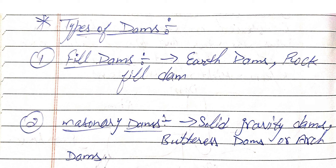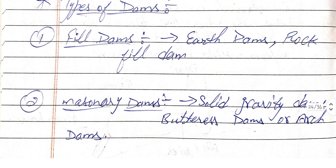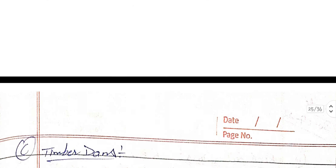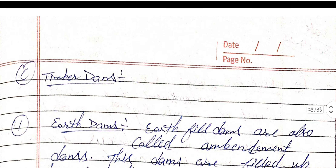The second type is the masonry dam, further explained in solid gravity dams, buttress dam, and arc dam. The third type is the timber dam.